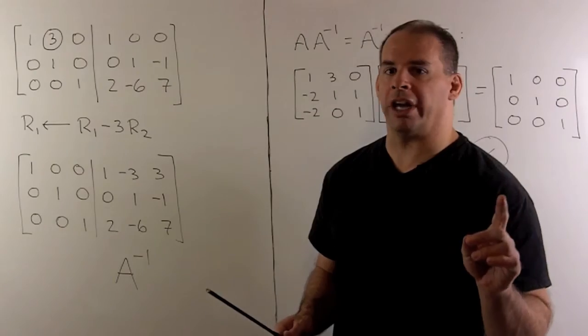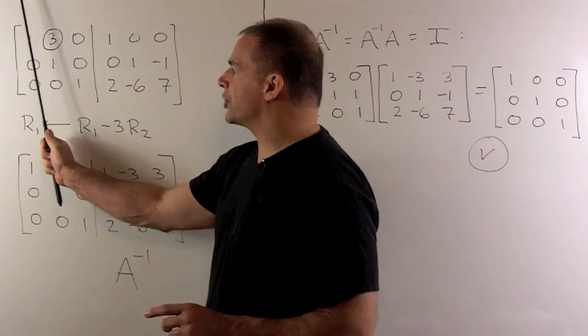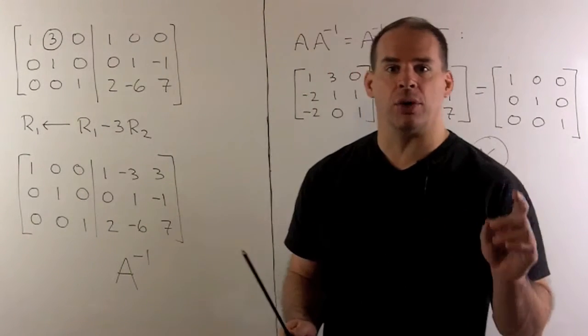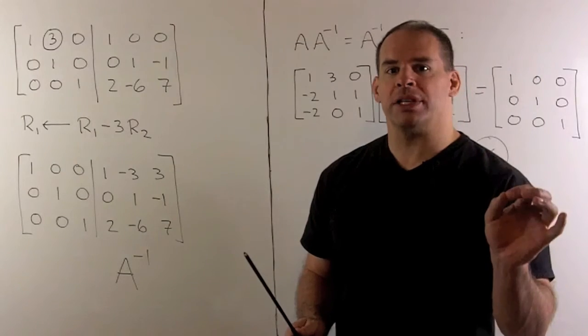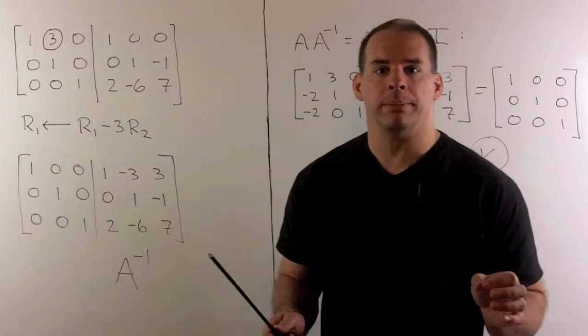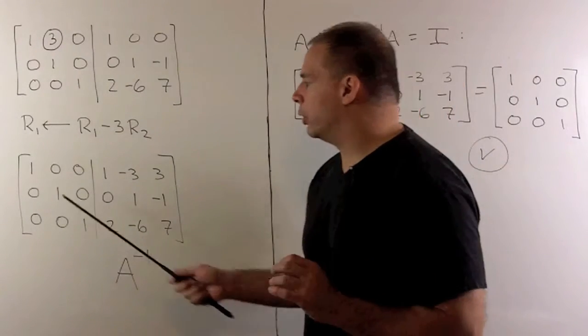So, how do we get rid of the 3? We ignore the third column on. I ignore the first column. I take minus 3 times the 1, add to the 3, I get a 0. So, we're going to take minus 3 times row 2, add it to row 1, and we get our new row 1. We do our bookkeeping, and here's our new row 1.